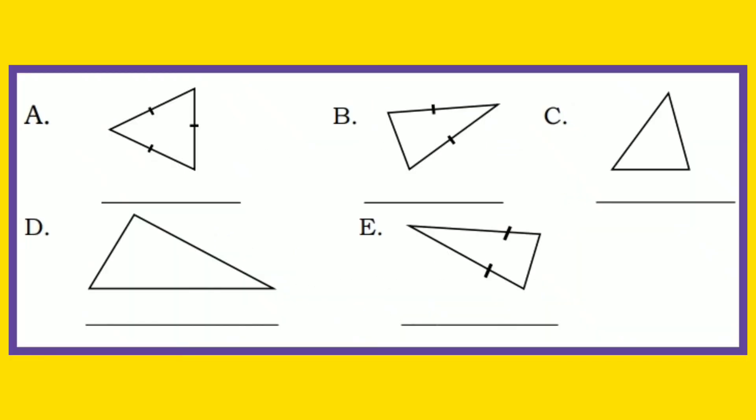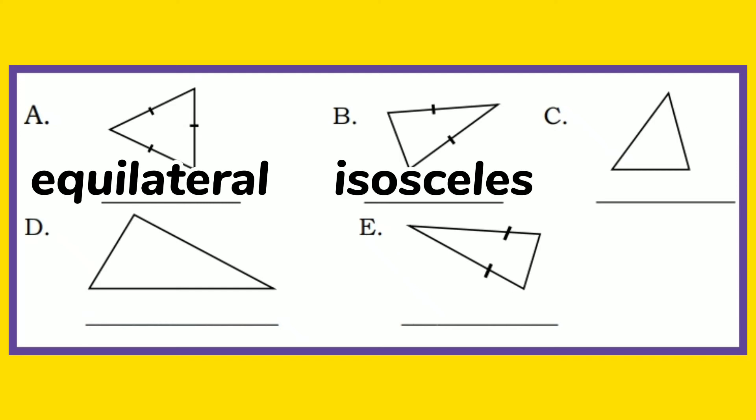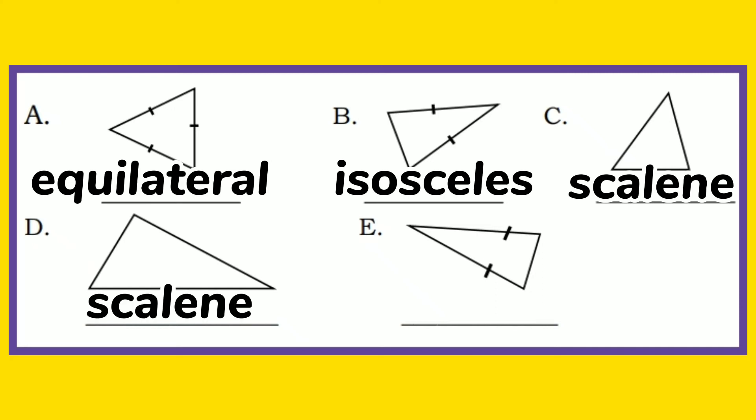Letter A is an equilateral triangle. Very good. B is an isosceles triangle. Yes. C is a scalene triangle. Good job. D is also a scalene triangle. And letter E is an isosceles triangle. Very good.